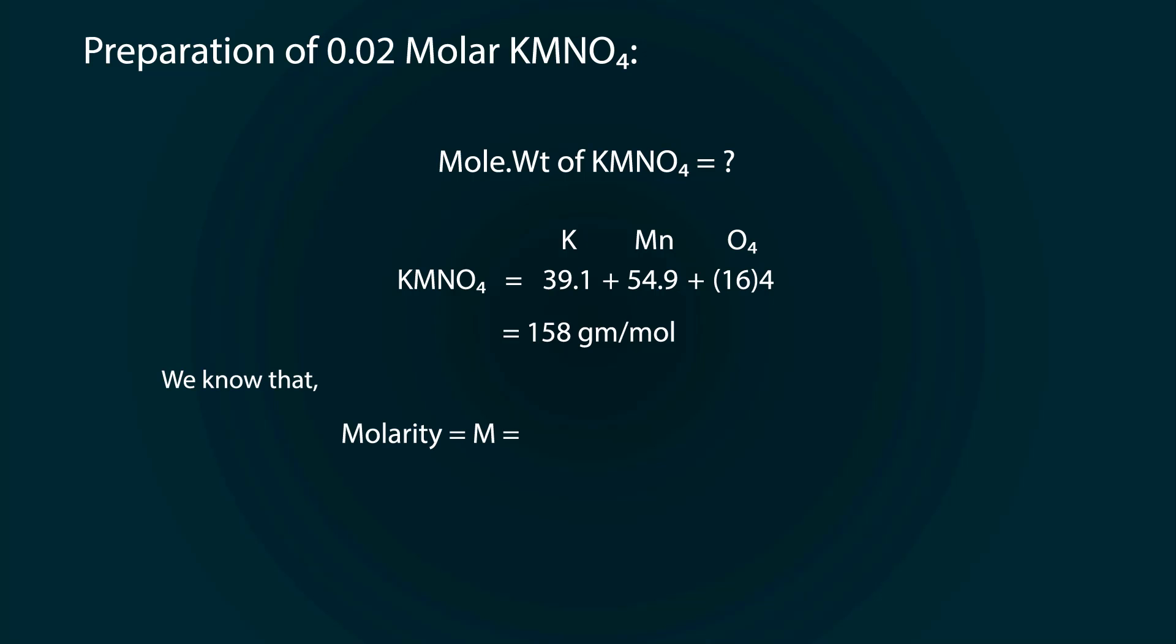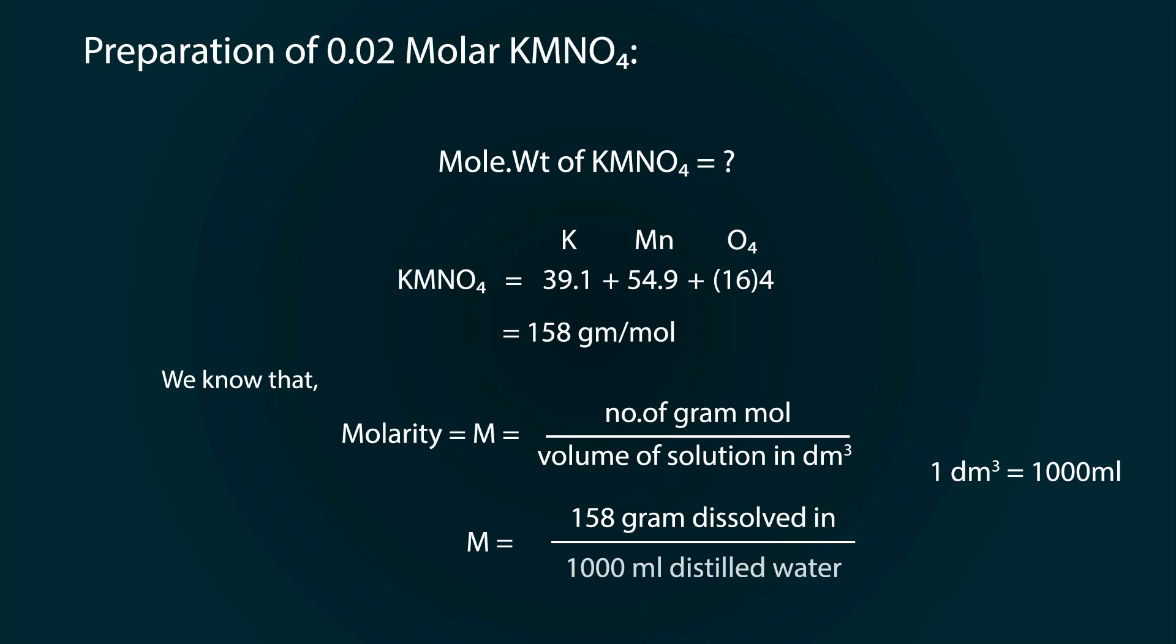We know that molarity is equal to number of gram moles divided by volume of solution which is 1 cubic decimeter. 1 cubic decimeter is equal to 1000 milliliters. So we need to dissolve 158 grams in 1000 milliliters for 1 molar.